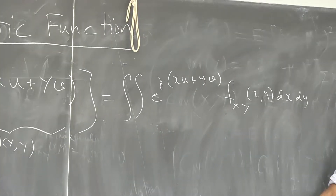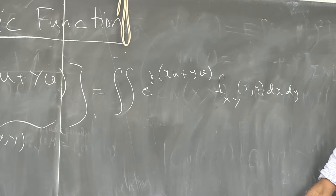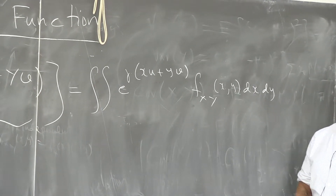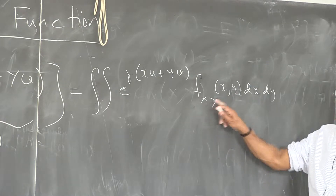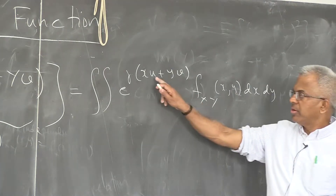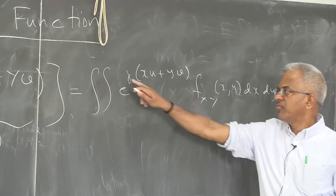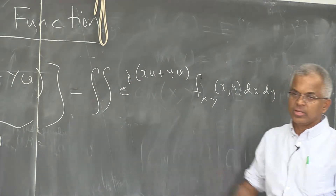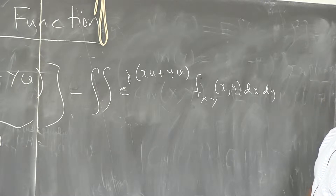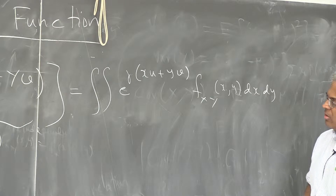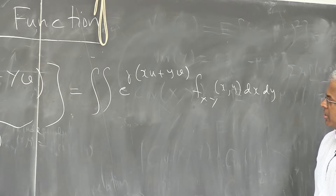Those of you who have seen Fourier transforms can also see that this is the Fourier transform of the joint density function evaluated at (u, v). In the Fourier transform, conventionally we have a minus sign, so you can think of it as ω₁ equal to minus u, and v equal to minus ω₂.